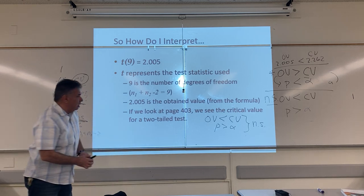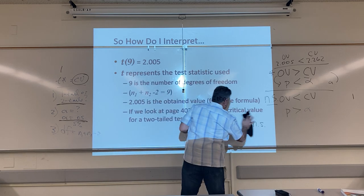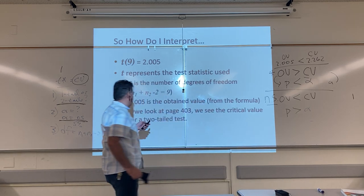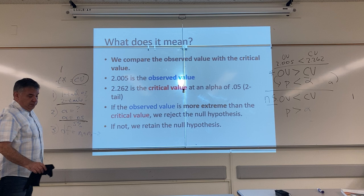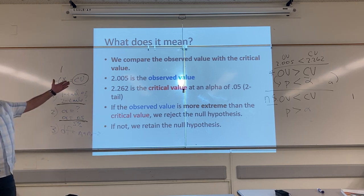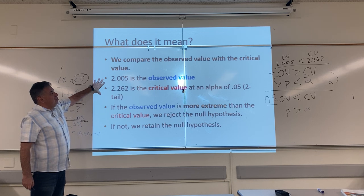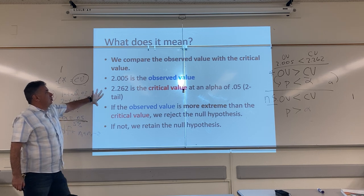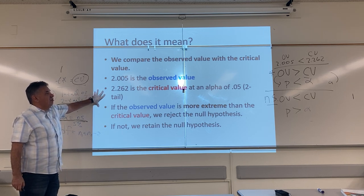Let's go to the next slide. Okay. So, what did we do? We compared the observed value with the critical value. 2.005 is the observed value. 2.262 is the critical value.